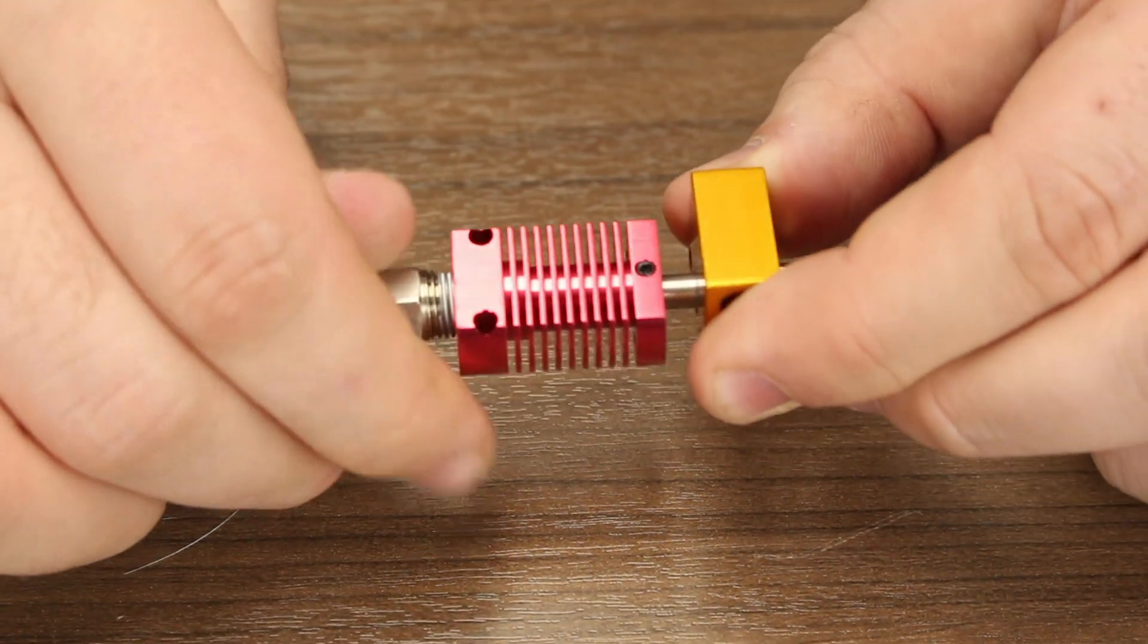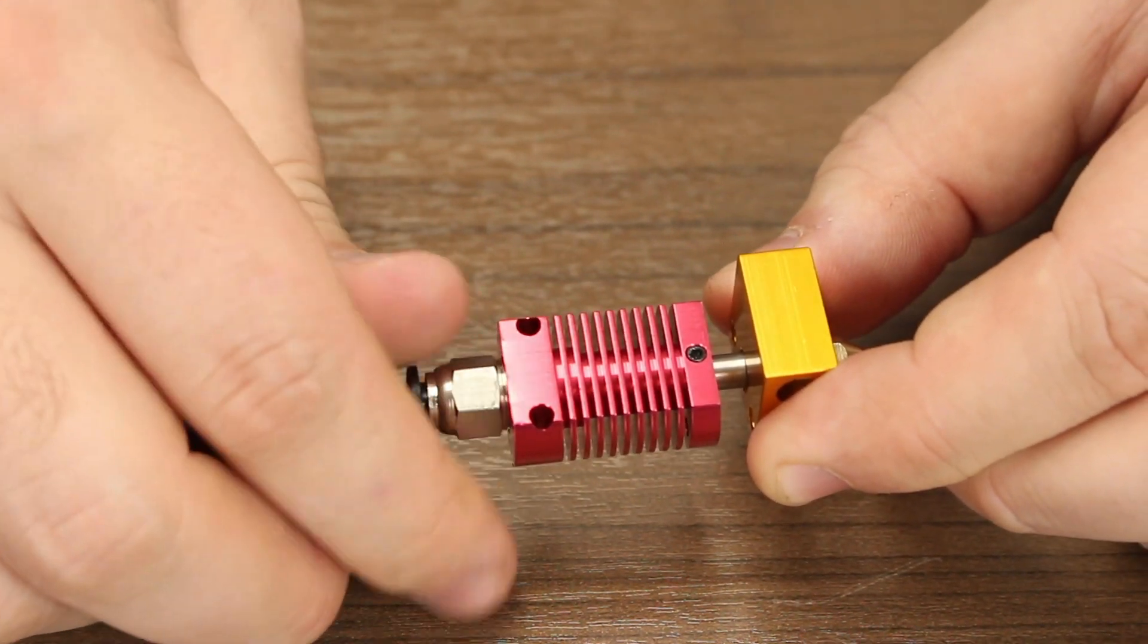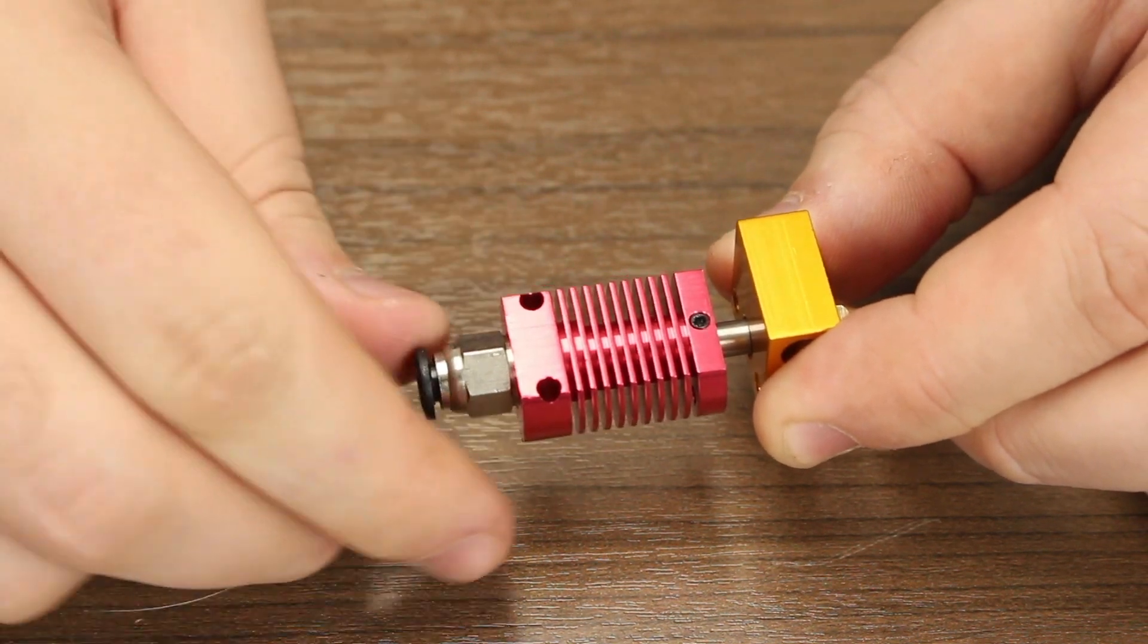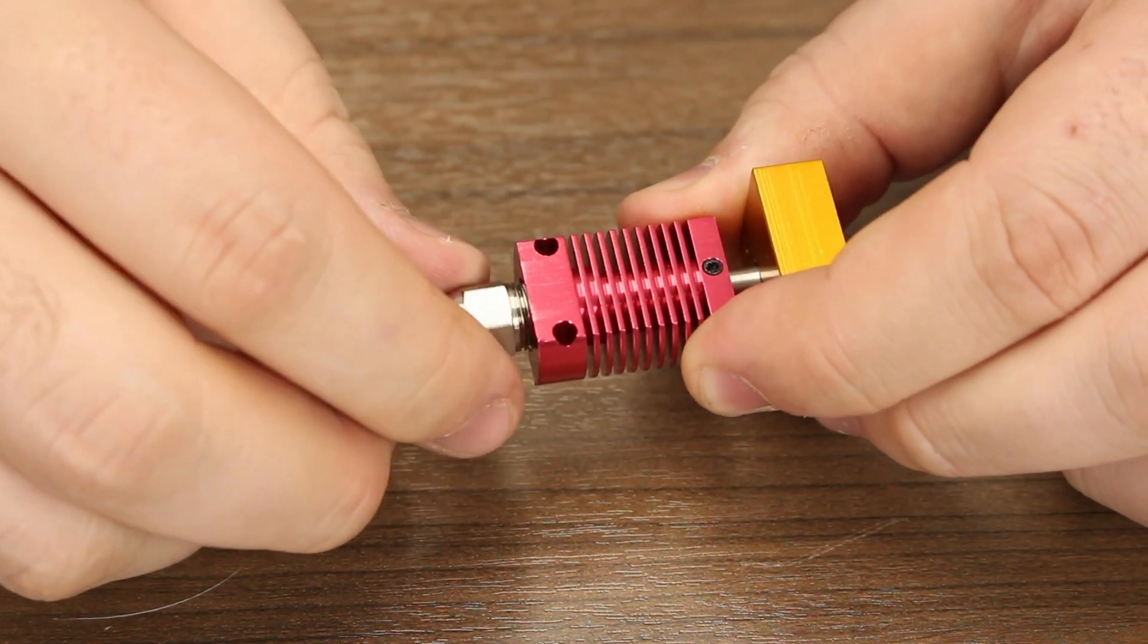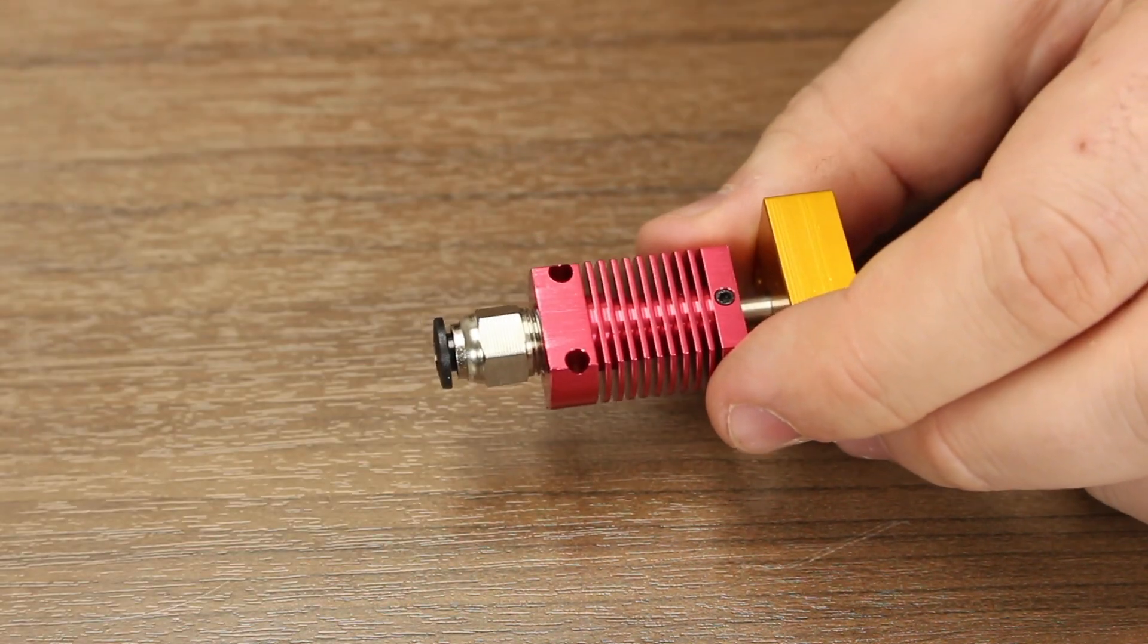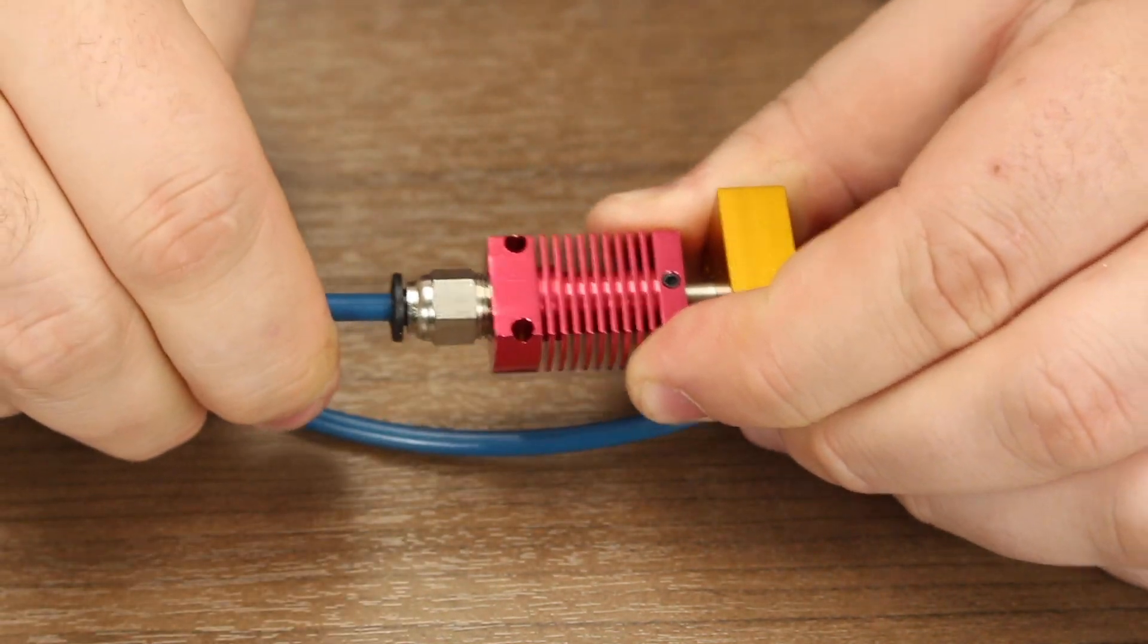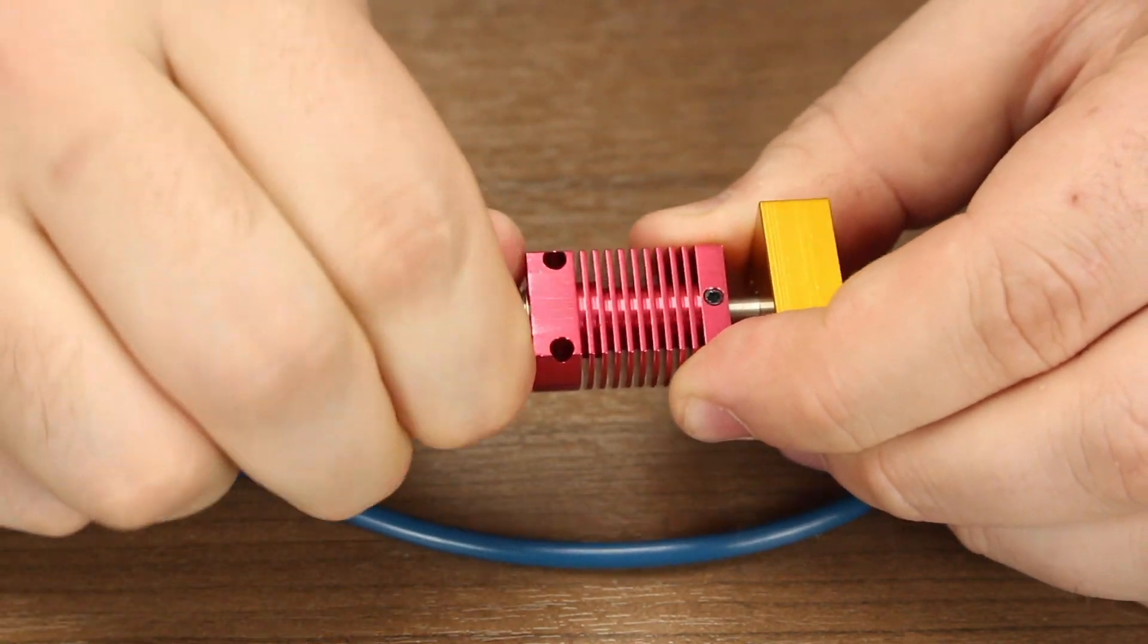Now we can screw our pneumatic fitting in from the top. Just like on the E3D heat sink, on the Creality heat sinks we don't want to screw the pneumatic fitting until you can't screw it in anymore. Leave about half the threads available to tighten down the PTFE tube. Insert the PTFE tube in and press it down until you can't anymore. Now you can tighten your pneumatic fitting.